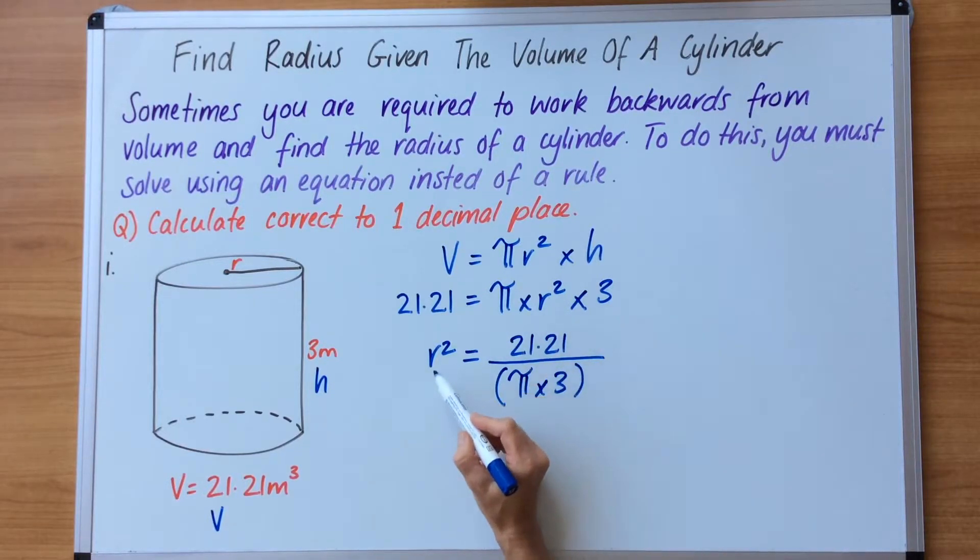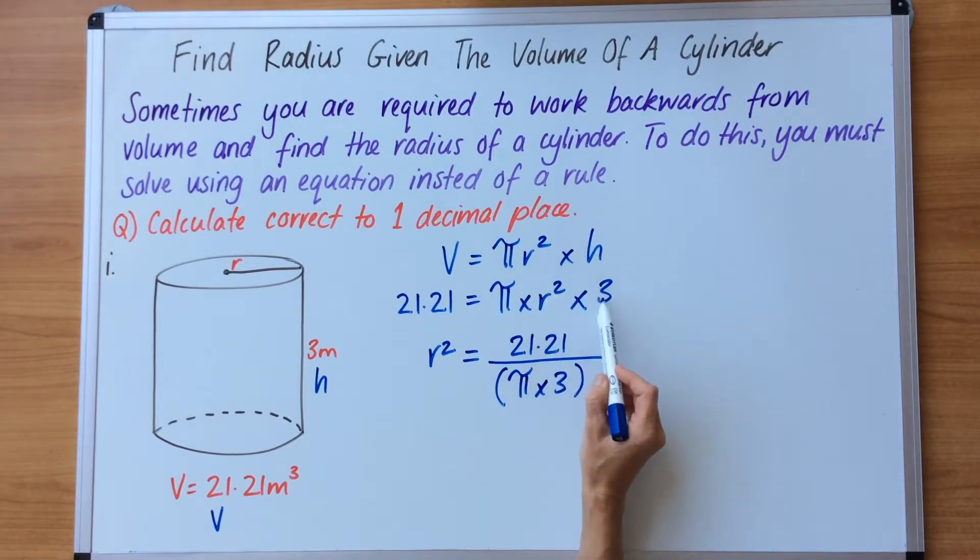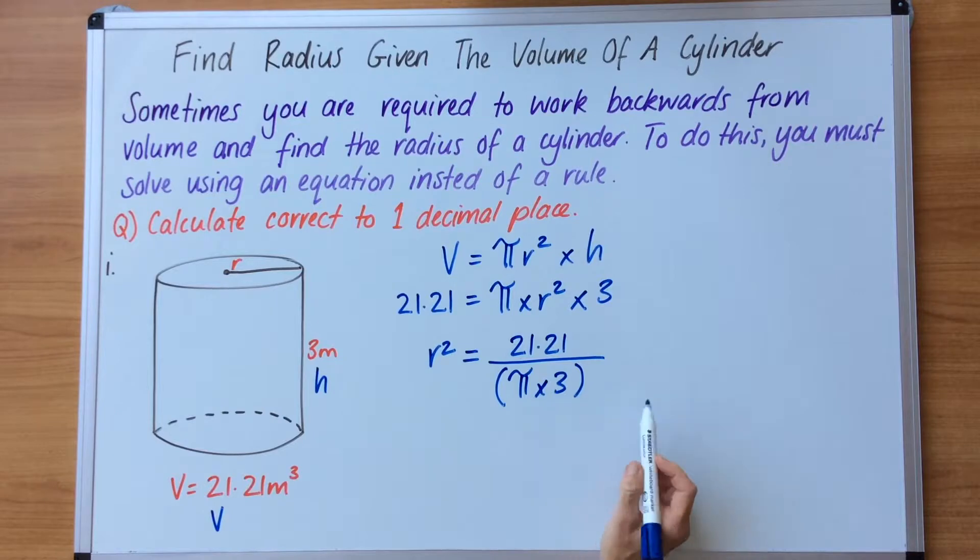We put the r squared because that's what we need to find out, and that has to go on the left hand side for letters on the left. This number gets switched over here on the top of a fraction line, and what's left over falls underneath and goes into brackets.